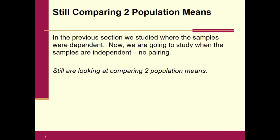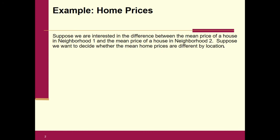We're still looking at two population means. Suppose we are interested in the difference between the mean price of a house in neighborhood one and neighborhood two. Suppose we want to decide whether the mean home prices are different by location. It seems reasonable.